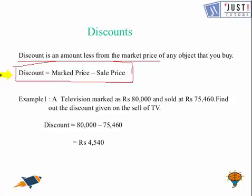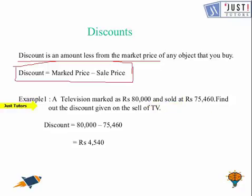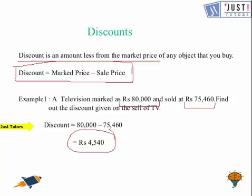Let's see this example. A television is marked at Rs. 80,000 and sold at Rs. 75,460. We need to find the discount. Discount equals the marked price minus the selling price, so it will be Rs. 80,000 − Rs. 75,460 = Rs. 4,540. That's the discount here.